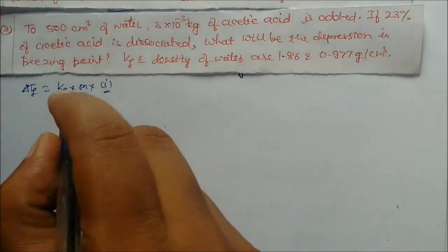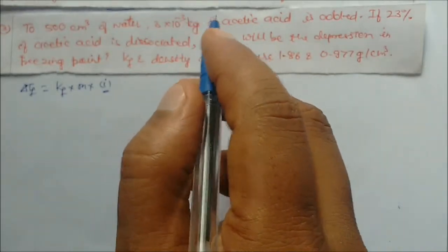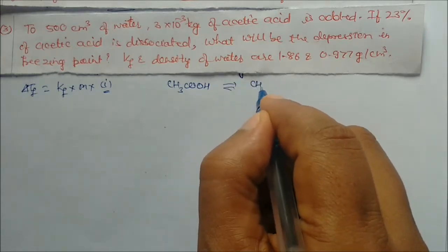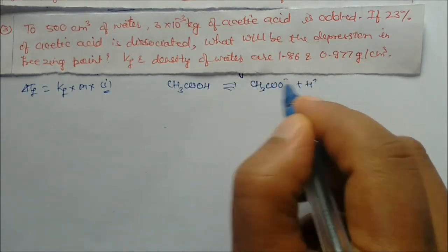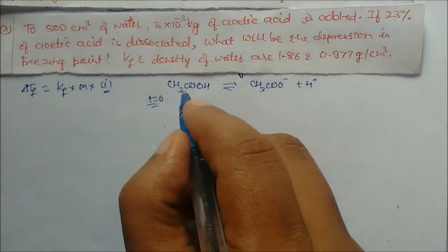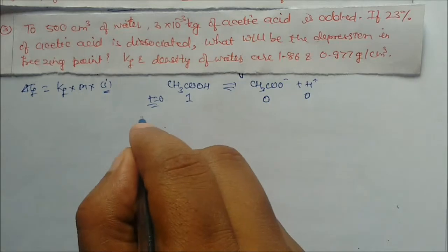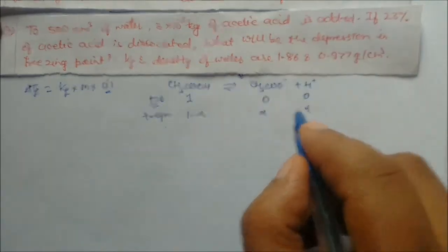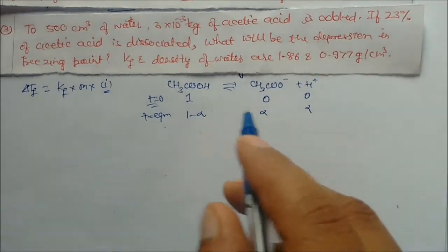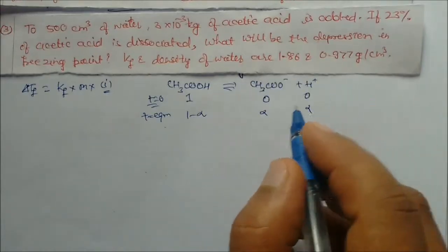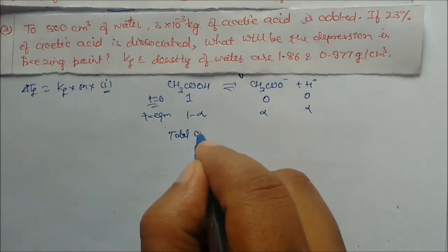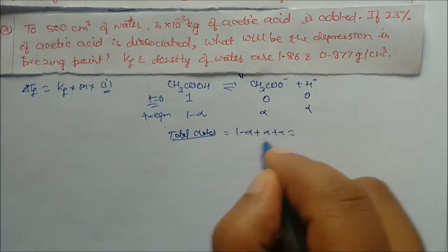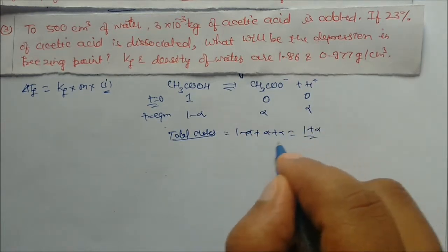We use delta Tf = i × Kf × m, where i is the van't Hoff factor, since acetic acid is an electrolyte. Acetic acid dissociates: CH₃COOH → CH₃COO⁻ + H⁺. At t = 0, moles are: 1, 0, 0. At equilibrium: (1 − α), α, α. Total moles = 1 − α + α + α = 1 + α. So i = 1 + α.